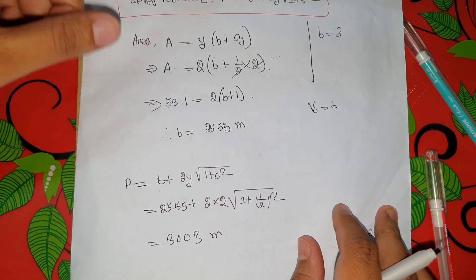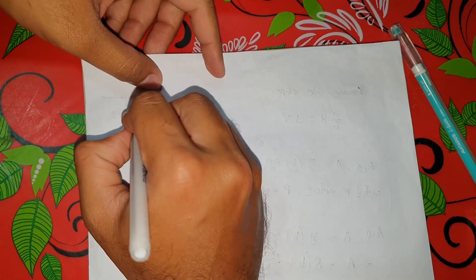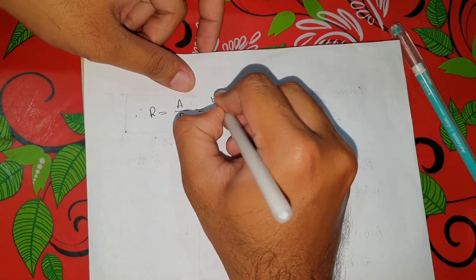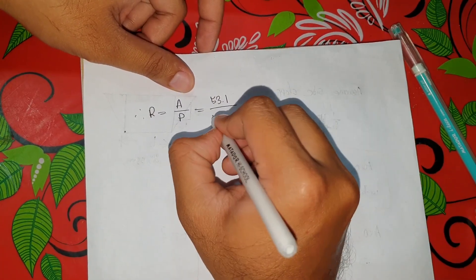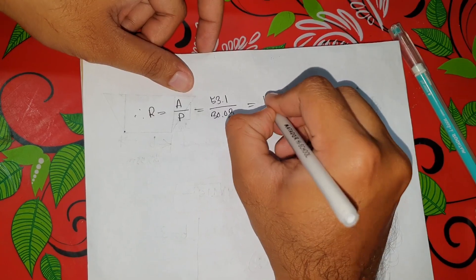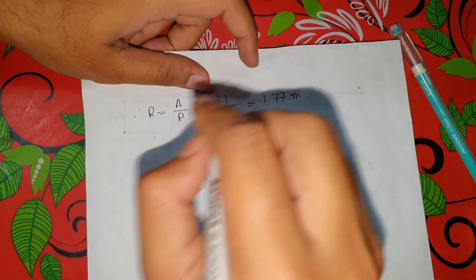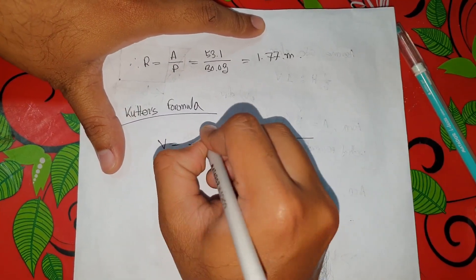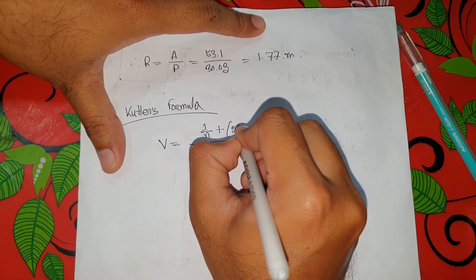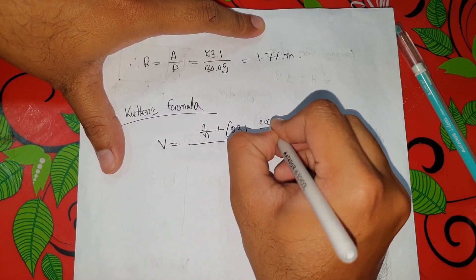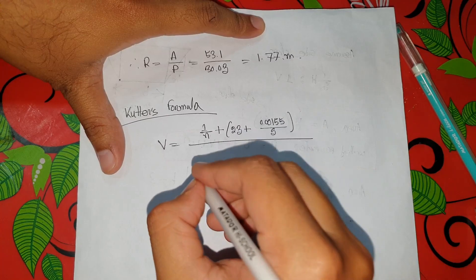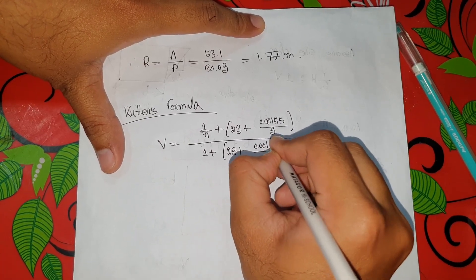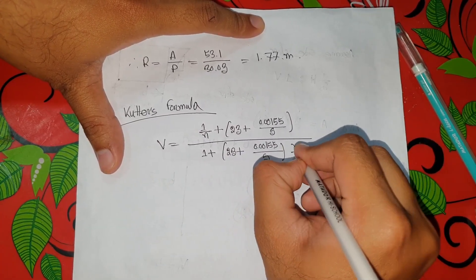With R equal to 1.71 and P equal to 30.03, we apply Cutter's formula: C equals 1 by N plus 23 plus 0.00155 divided by S, all divided by 1 plus (23 plus 0.00155 divided by S) times N by root R. Here N equals 0.023 and S equals 1 by 4000.